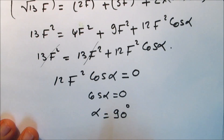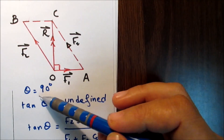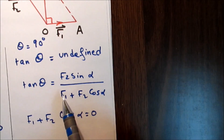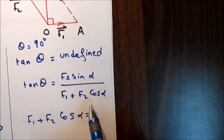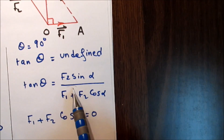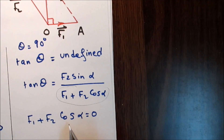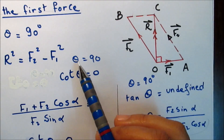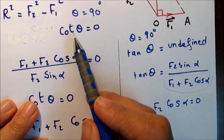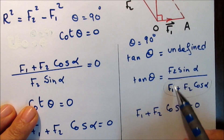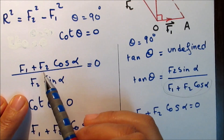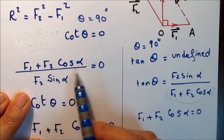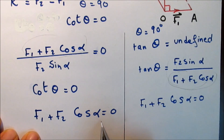If the resultant is perpendicular to one of the two forces, the angle θ equals 90°, so tan θ is undefined. Using the formula tan θ = (F2·sin α) / (F1 + F2·cos α), if tan θ is undefined, the denominator equals zero: F1 + F2·cos α = 0. Equivalently, cot θ = (F1 + F2·cos α) / (F2·sin α) = 0, meaning the numerator equals zero, confirming F1 + F2·cos α = 0.